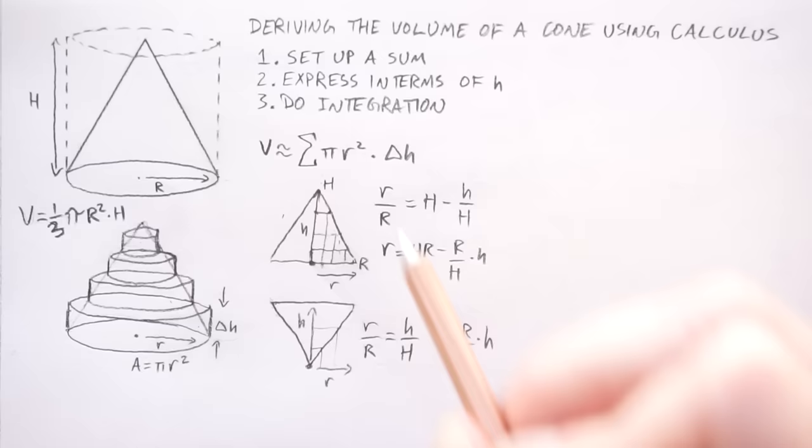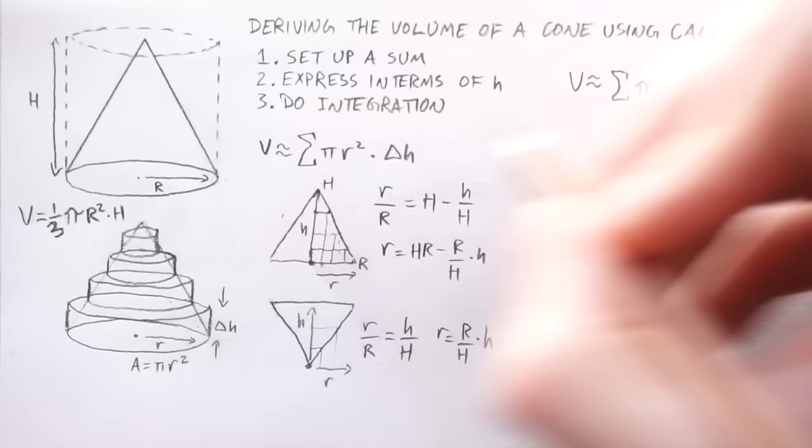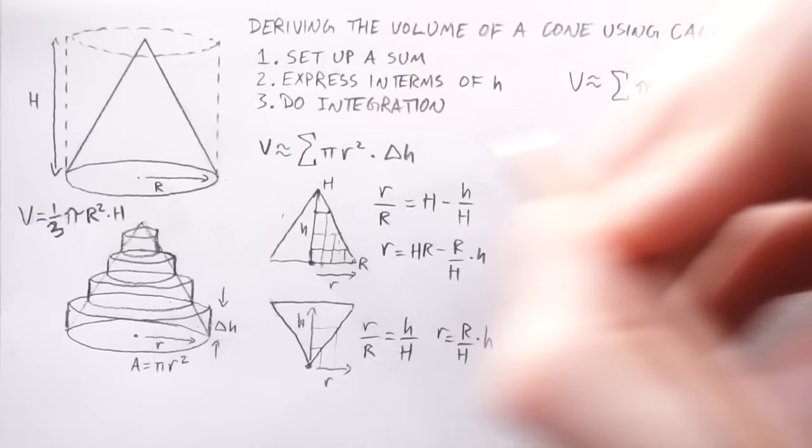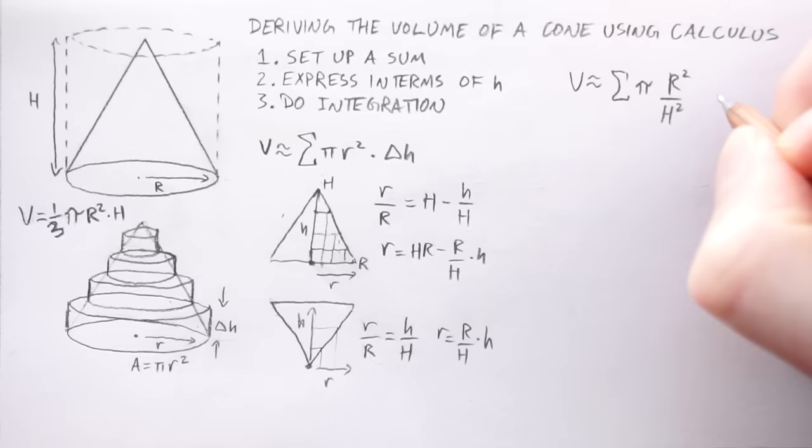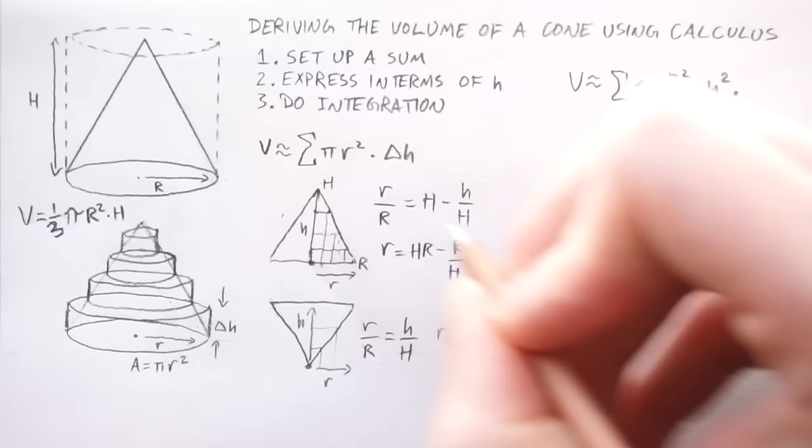So let's finish off step two now, expressing this volume in terms of the height. So the volume is approximately equal to the sum of pi. And now we need to do the squared. So we're going to take this expression here and square it. So it will be R squared over H squared times little h squared times delta h.